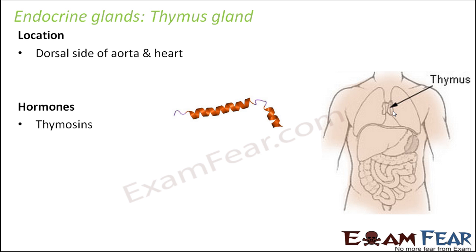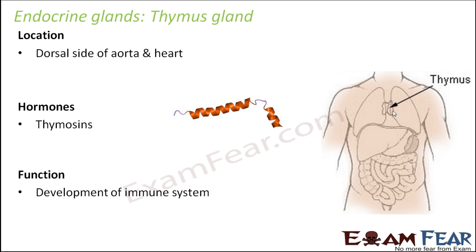Thymosines are peptide hormones — if you look at their chemical structure, they contain peptides. They play a very important role in the immune system of the body. One of the important constituents of the immune system are the lymphocytes, which help the body fight against infections. These thymosine hormones help in the differentiation of T lymphocytes, and that is one way they help develop the immune system.